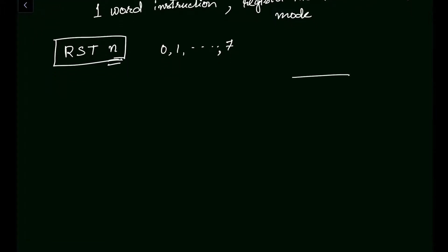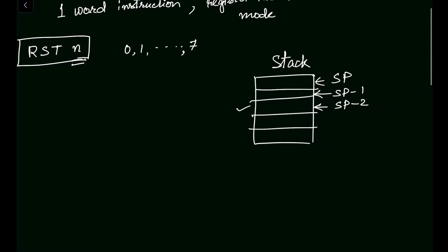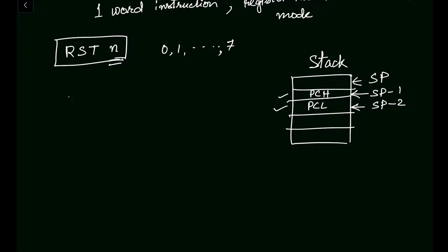To save the PC content in the stack: if the stack pointer is pointing at a certain address, we store the lower order eight bits at SP minus 2, and at SP minus 1 we store the content of PCH - that is the program counter higher order bits. PCL is stored at SP minus 2 and PCH is stored at SP minus 1.